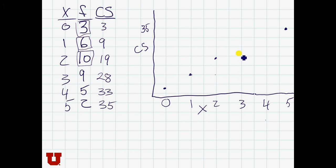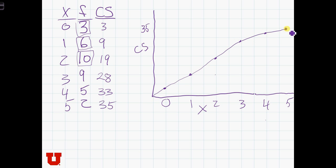3 is 28. 5, 10, 15, 20, 25, 28. And 4 is 33. So the cumulative frequency plot is going to look something like that.